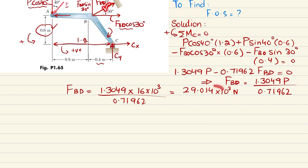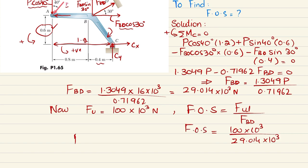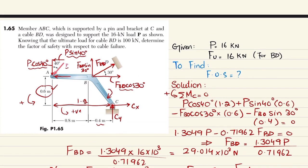The force in cable BD is 29.014 kilonewtons. The ultimate force is given as 100 kilonewtons. The factor of safety equals F ultimate divided by the working force FBD: 100 times 10³ divided by 29.014 times 10³, which gives a factor of safety equal to 3.45 for cable BD.